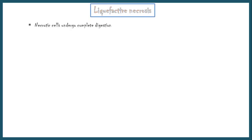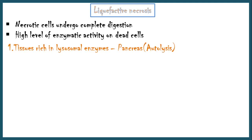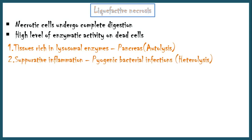In liquefactive necrosis, the necrotic cells undergo complete digestion, giving rise to a liquid-like material — this process is called liquefaction. This is due to high levels of lysosomal enzymatic activity on dead cells. Liquefaction is seen in tissues rich in lysosomal enzymes, like the pancreas; in these situations, removal of dead tissue occurs by autolysis. Liquefaction also occurs in suppurative inflammation, such as in pyogenic bacterial infections, where removal of dead tissue occurs by heterolysis.